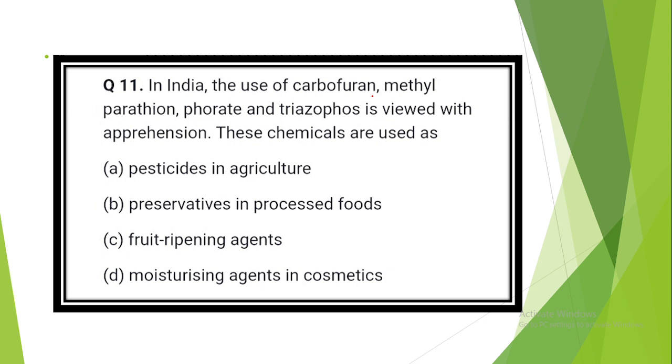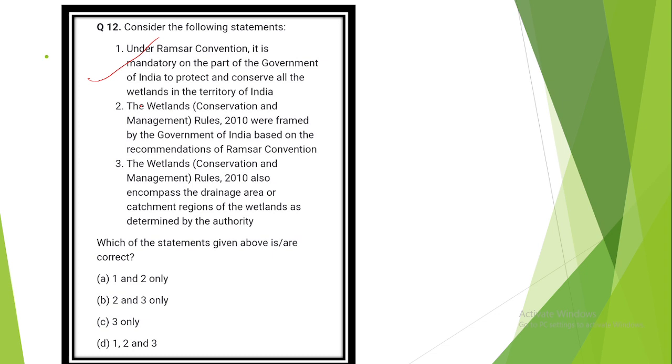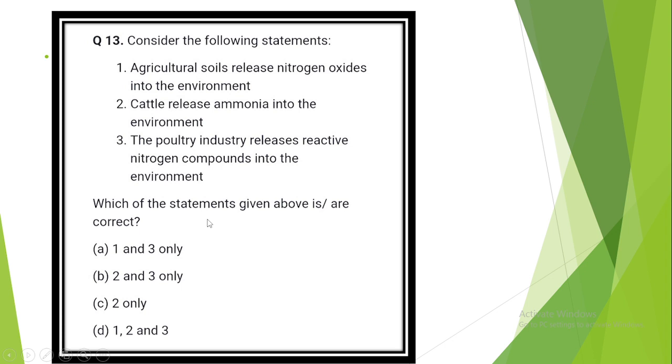Question number 10. Consider the following. Which of the above are released into the atmosphere due to the burning of crop biomass residue? Answer is option D: Carbon monoxide, methane, ozone and sulfur dioxide. Question number 11. India's use of carbofuran, methyl parathion, phorate and triazophos is viewed with apprehension. These chemicals are used as pesticides in agriculture. Question number 12. Option B: 2 and 3. Wetland Conservation Management Rules 2010 were framed by the government of India based on the recommendation of Ramsar Convention. The Wetland Conservation and Management Rules 2010 also encompasses the drainage area or catchment regions of the wetlands as determined by the authority.